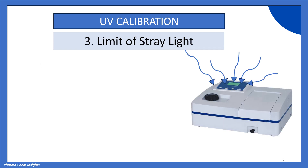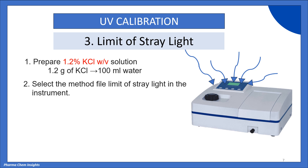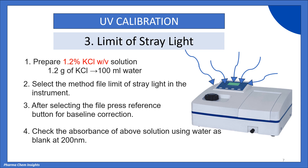The third parameter is limit of stray light. In this, we prepare a 1.2% weight by volume KCl solution. For this, we weigh 1.2 grams of KCl and dissolve in 100 ml water. Select the method file 'Limit of Stray Light' in the instrument. After selecting the file, press the reference button for baseline correction. Check the absorbance of the above solution using water as blank at 200 nm. Absorbance should be greater than 2.0. If it is greater than 2.0, the limit of stray light test is passed; if less than 2.0, the test will be failed.